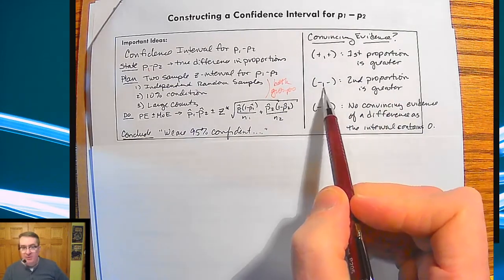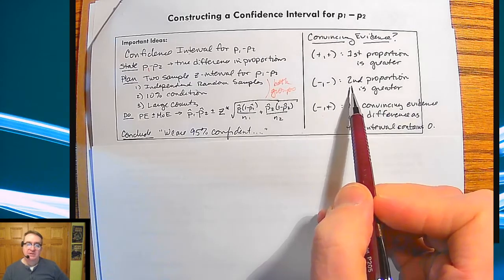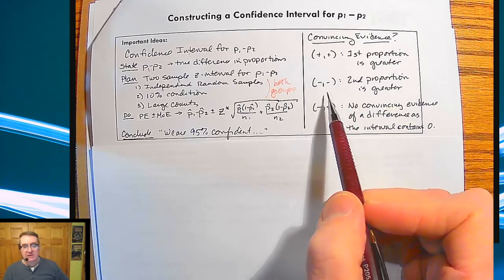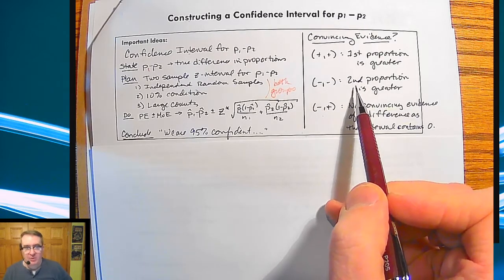The same thing can happen if they're both negative. That means the second proportion is greater. This would be the smaller value. This would be the bigger value. So then you would say, that's the group from where we're doing things.